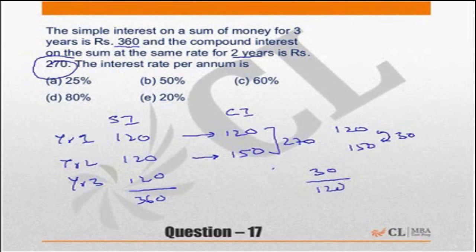That 30 is the interest on the interest of 120. So the rate of interest would be 25 percent.